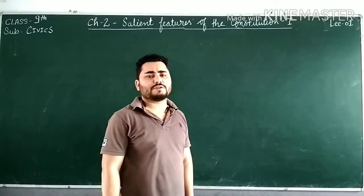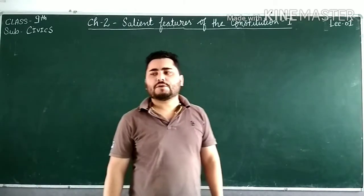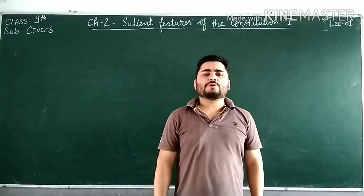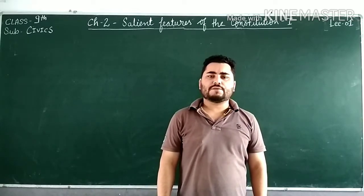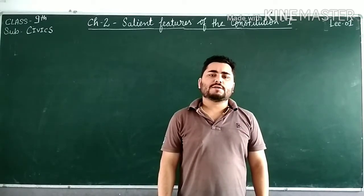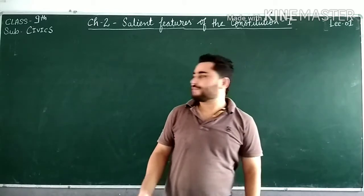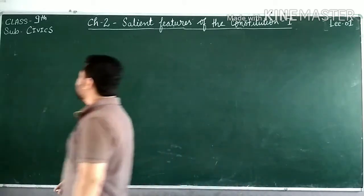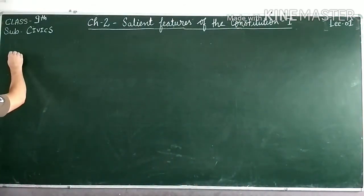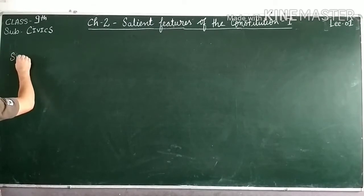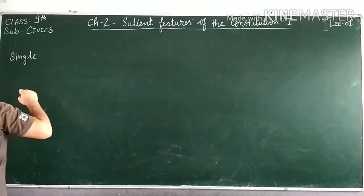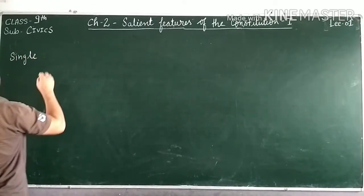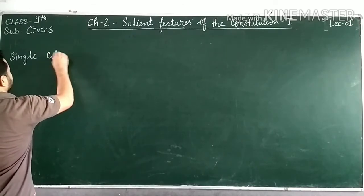Which are the outstanding features of our constitution? In our book there are three features given. The first one is single citizenship, the second one is universal adult franchise, and the third one is fundamental rights. We will start by studying single citizenship.